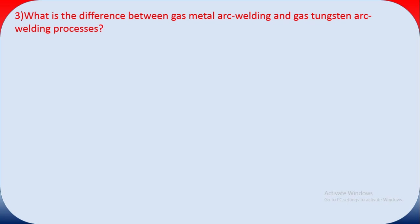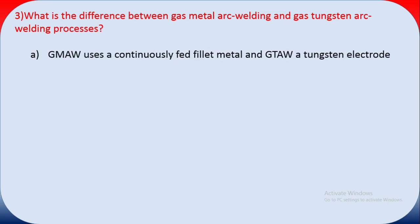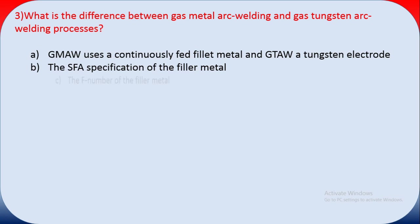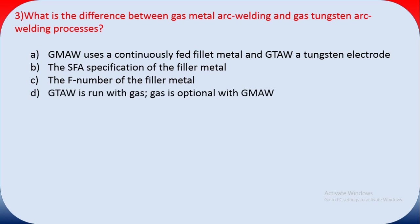Question three: what is the difference between gas metal arc welding (GMAW) and gas tungsten arc welding (GTAW)? GMAW deposits metal as arc welding while GTAW uses a non-consumable tungsten electrode. Option A states GMAW uses a continuously fed filler metal and GTAW uses a tungsten electrode — this is correct. Options B, C, and D are not applicable. The answer is A.